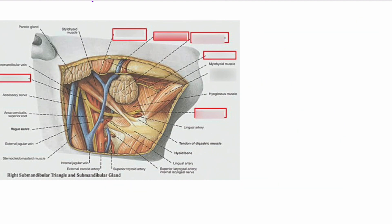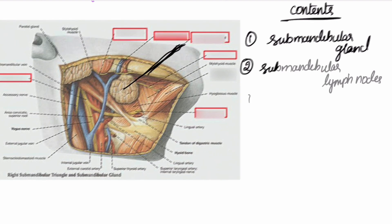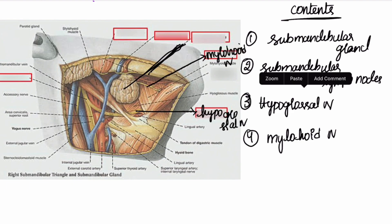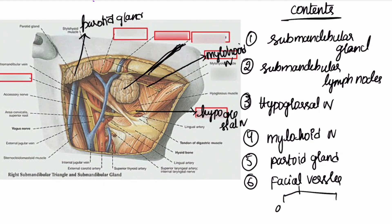The contents of the submandibular triangle include the submandibular gland, the submandibular lymph nodes, the hypoglossal nerve, the mylohyoid nerve, the apex of the parotid gland, and the facial vessels — that is the facial artery and the facial vein.